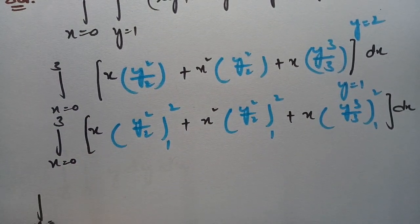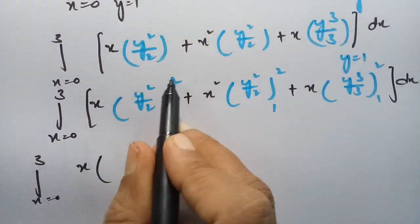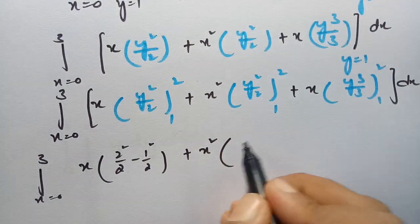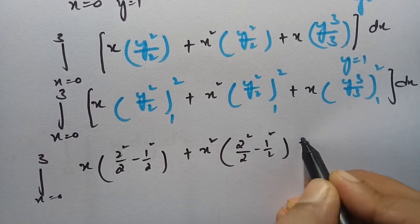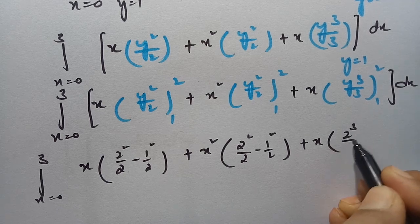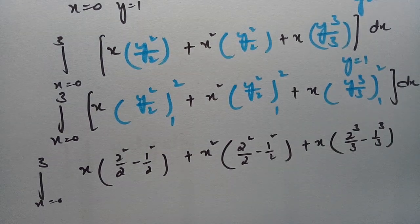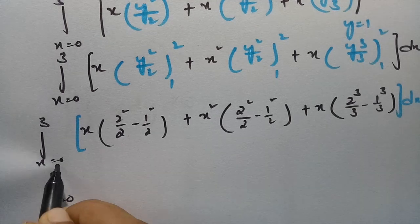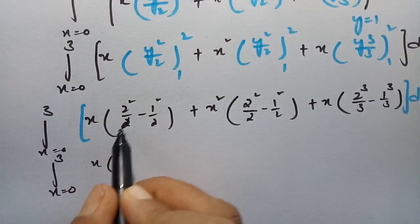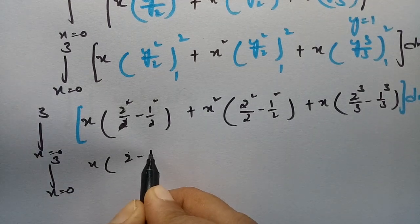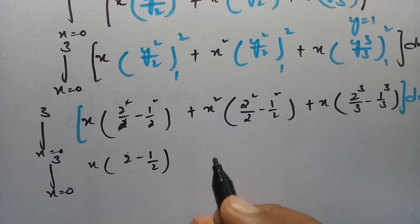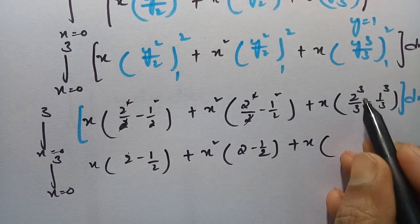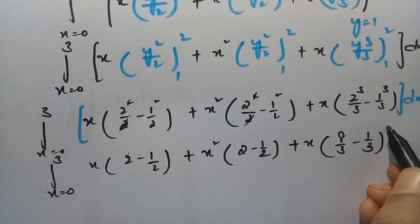Now substituting the limits with x from 0 to 3: this is x times (2²/2 − 1²/2) plus x² times (2²/2 − 1²/2) plus x times (2³/3 − 1³/3) dx.